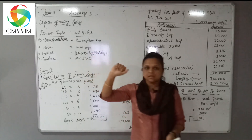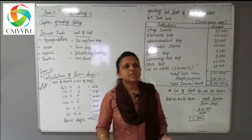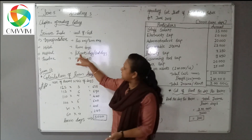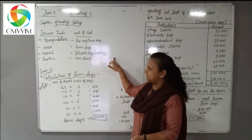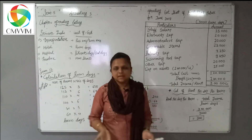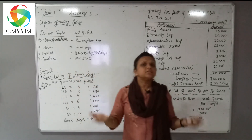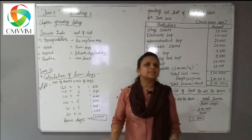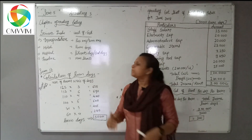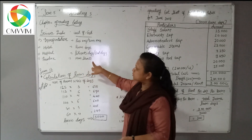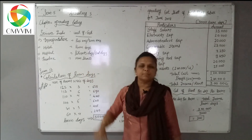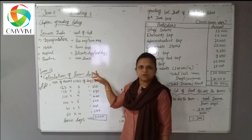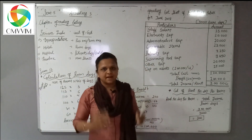In hospitals, how many beds are utilized — measured in patient days or bed days. Then for theater: how many shows per day, how many seats out of the total seats are occupied, and how many shows. On that basis they find out the main unit of cost. After finding out the unit of cost, they decide the rent and tickets.